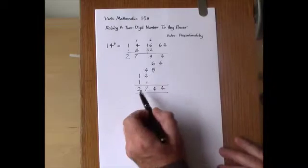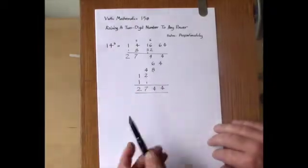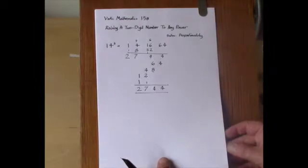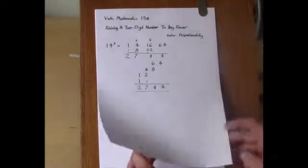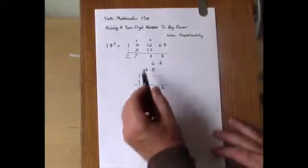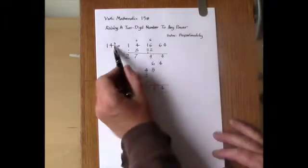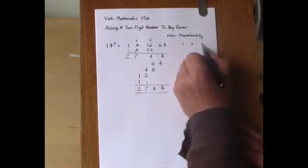It's that setting out which I'm going to use to show how to raise a number, a two digit number to a higher power. And of course it uses the binomial coefficients. The binomial coefficients for cubes are 1, 3, 3, 1.